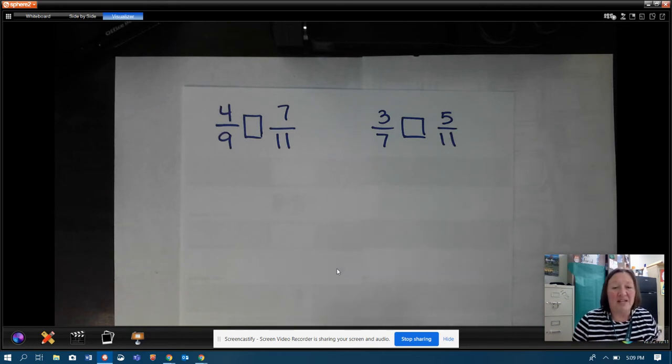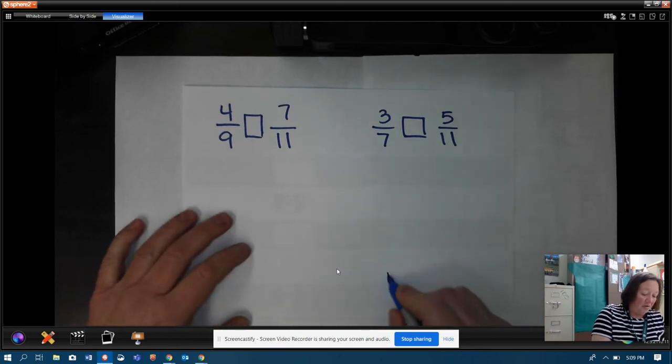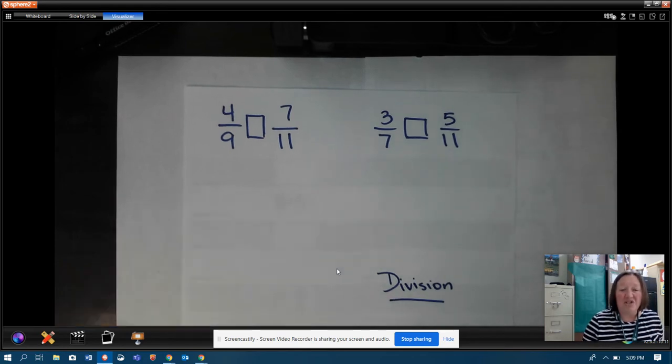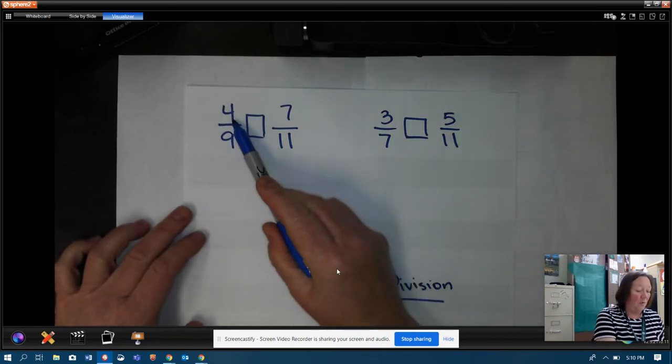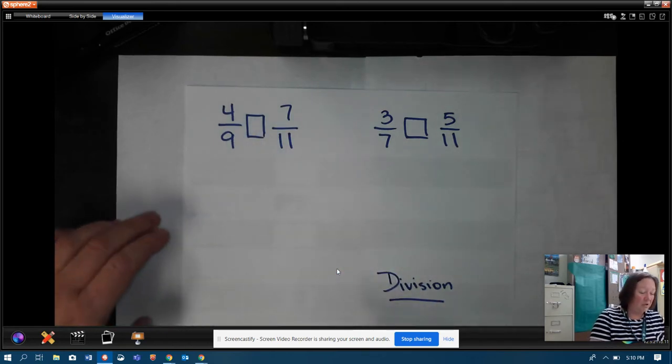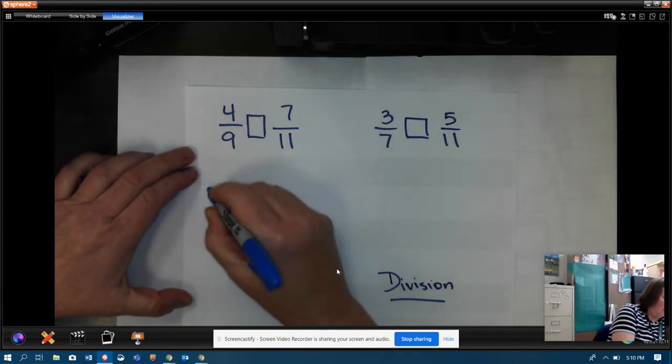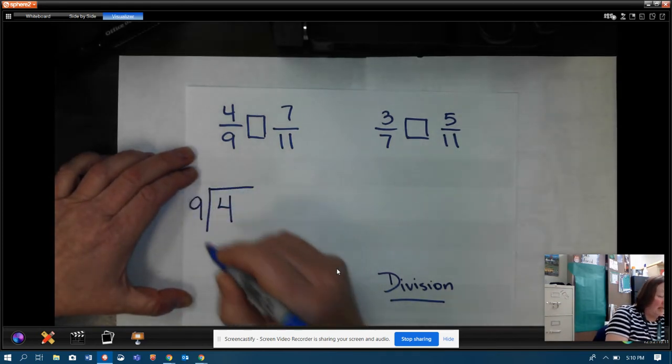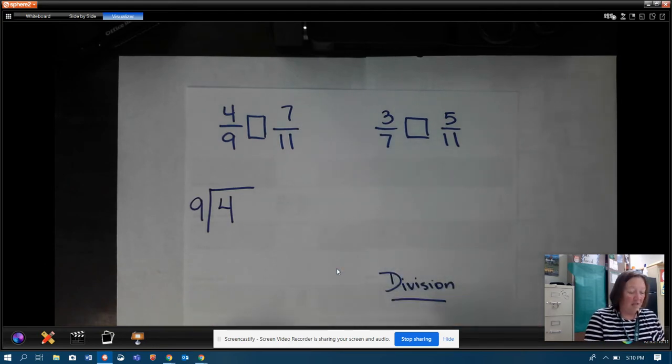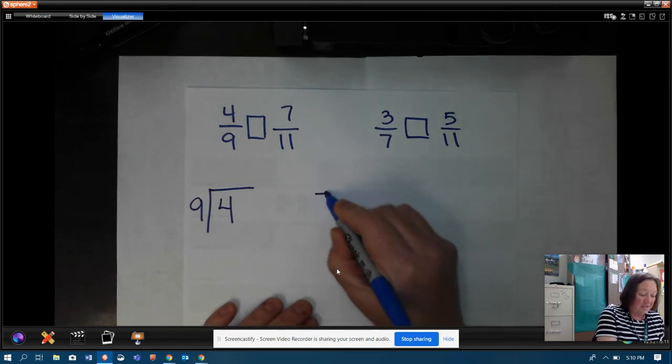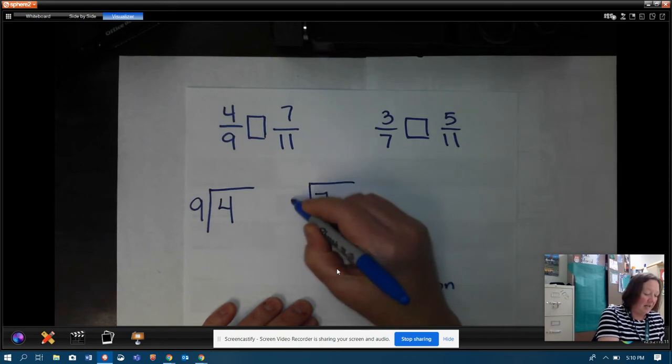All right, now think back. We said that all fractions are really division problems. So if these are division problems, all I need to do is that division problem to turn it into a decimal point. So this is four over nine and the division problem we would do would be four divided by nine. This is seven over eleven. The division problem we would do is seven divided by eleven.